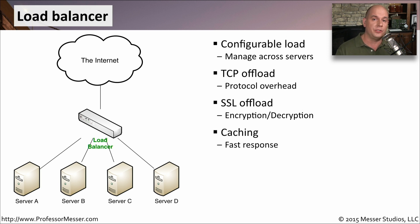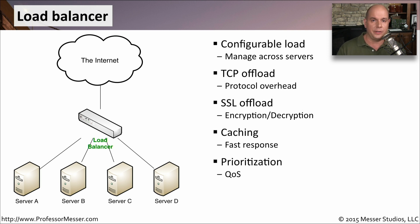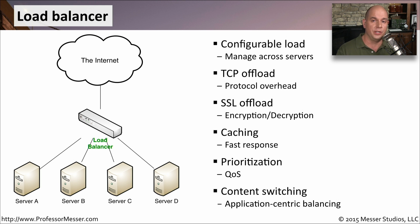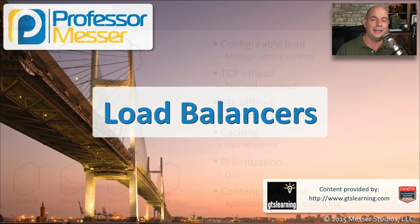Load balancers can also do caching — the load balancer itself may keep data and provide that information back to the end user. If this is static information, it doesn't have to go down to the web server to retrieve it, which means you see it faster in your browser. There is also prioritization of data: certain applications can respond faster than others, and the load balancer may be smart enough to provide quality of service differentiation between those applications. The load balancer may also decide how to distribute the load based on application, so one application may distribute load across certain servers while another uses the same load balancer but distributes across a completely different set of servers.